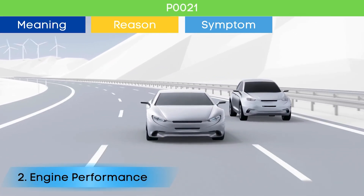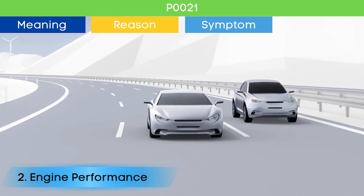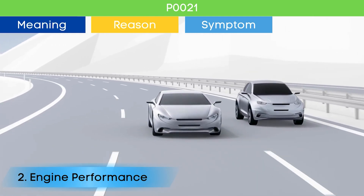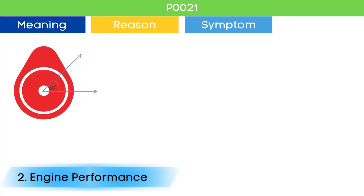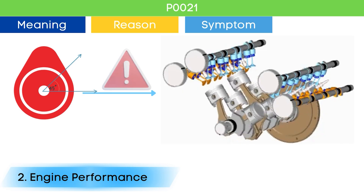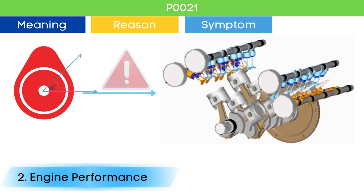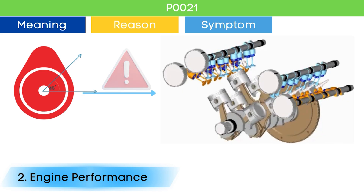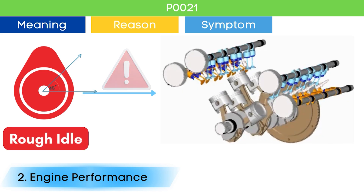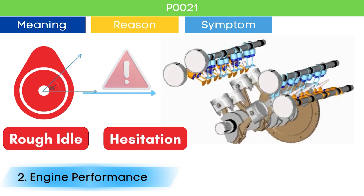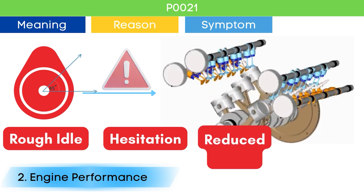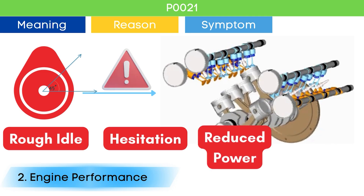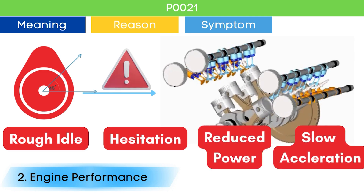Symptom number two: poor engine performance. Problems in the cam position actuator circuit can lead to incorrect cylinder valve opening and closing. This can manifest as rough idle, hesitation, reduced power, and sluggish acceleration.